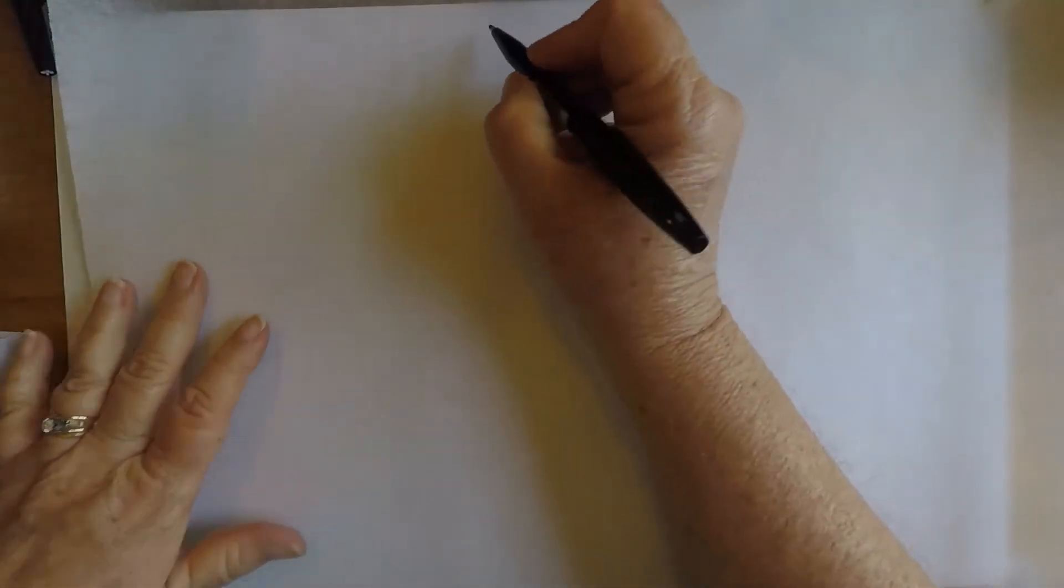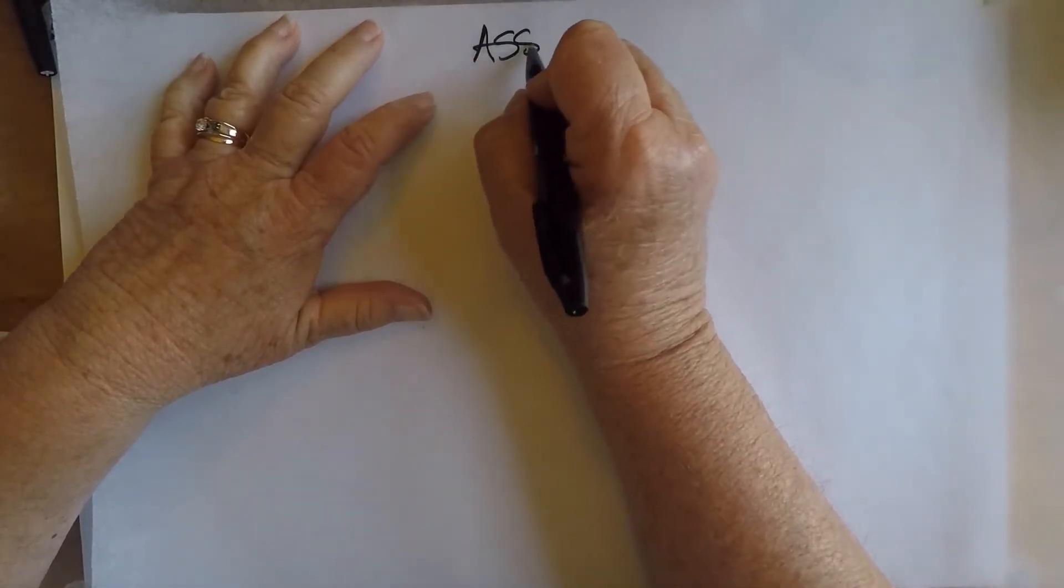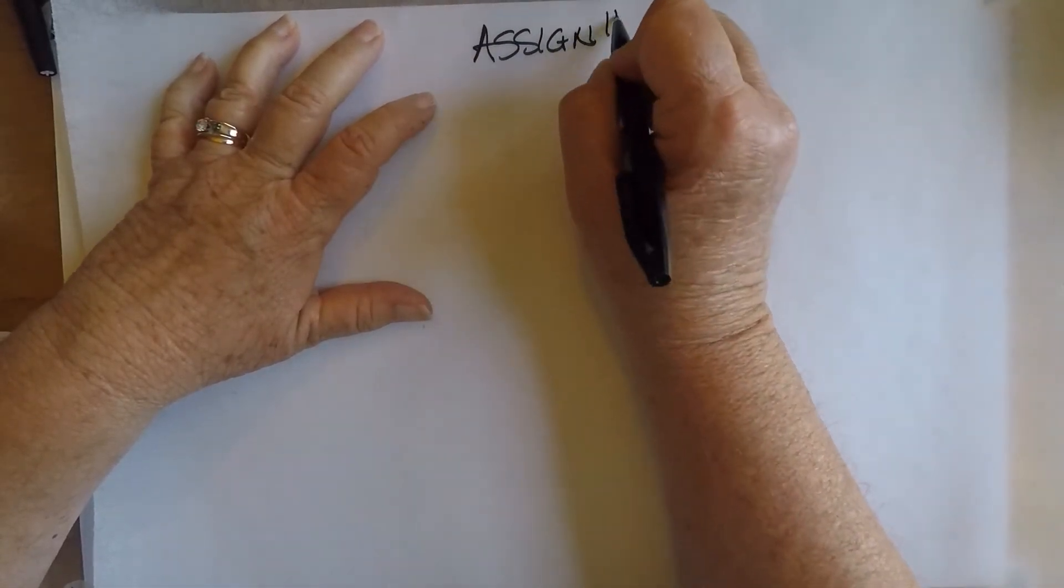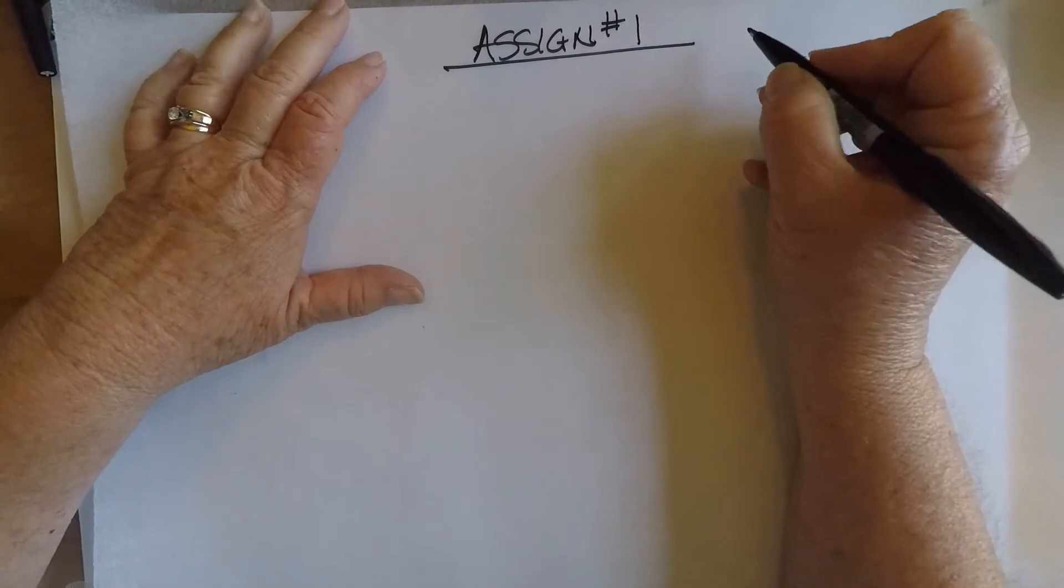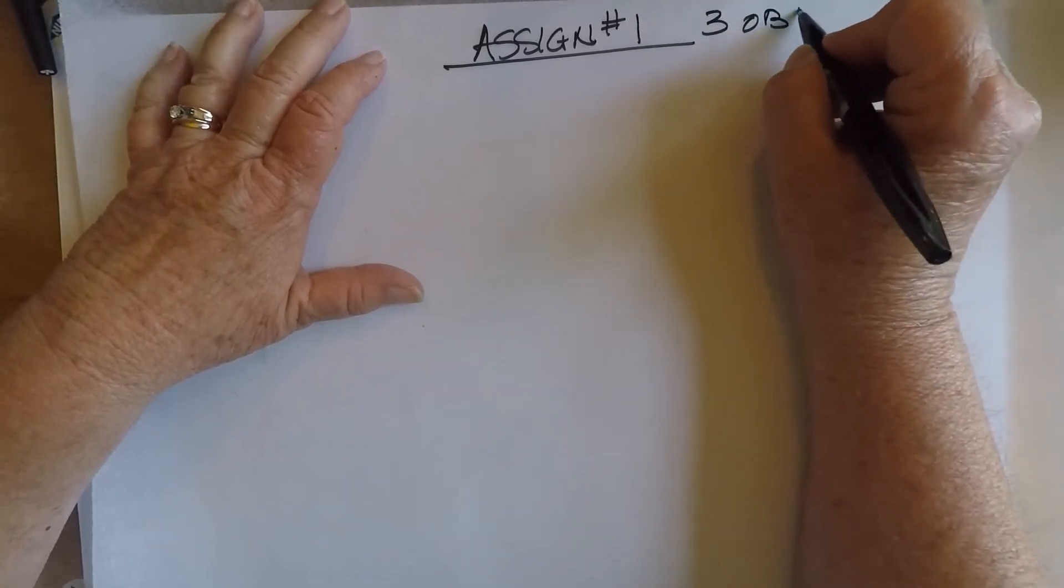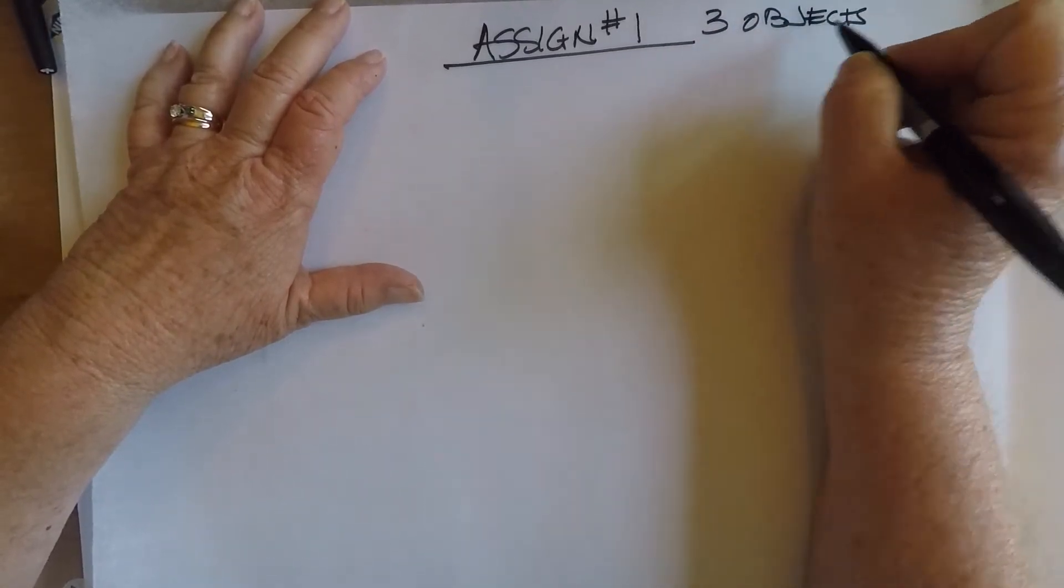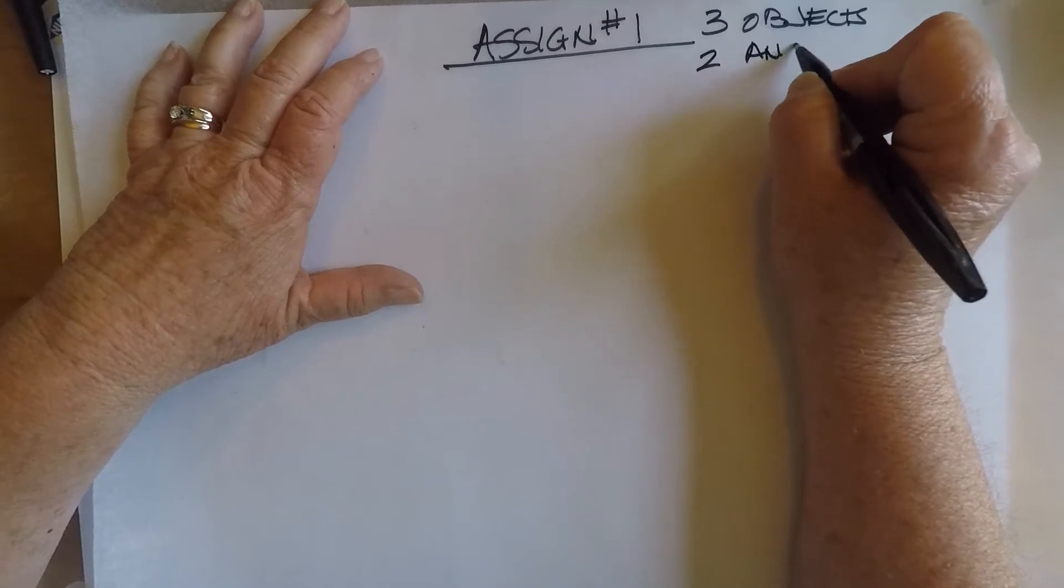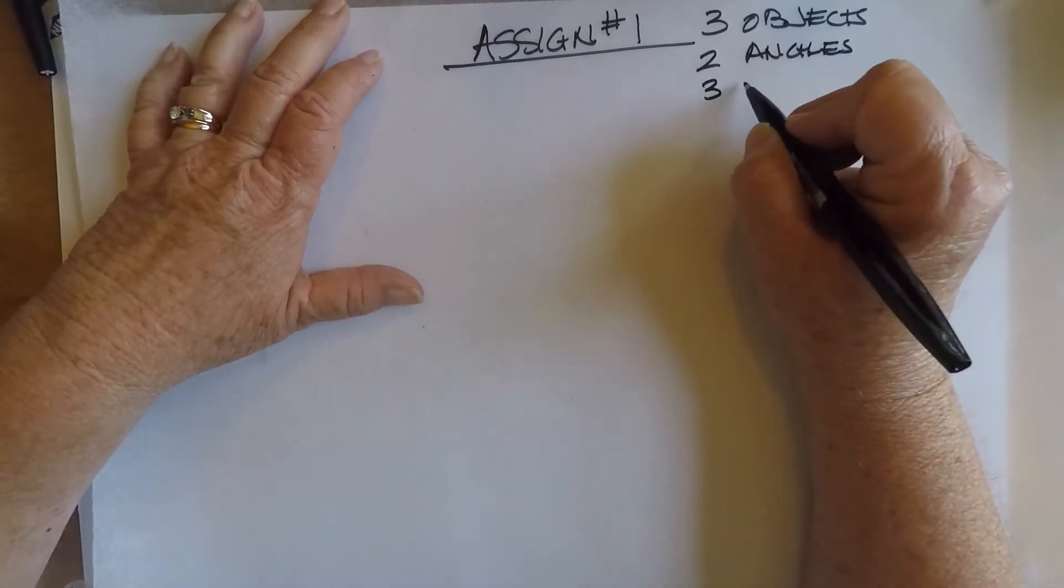Okay, now we're going to demo Assignment 1, which will be 3 objects, 2 angles, 3 line weights.